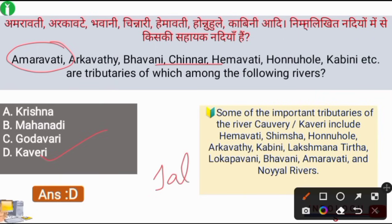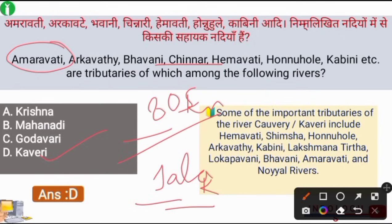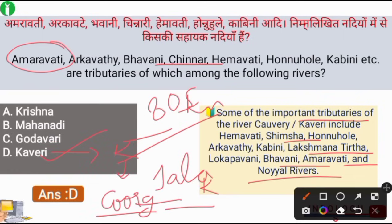The Kaveri River originates from Talakaveri in the Western Ghats. Its length is around 805 kilometers and it finally drains into the Bay of Bengal. It is an important river of South India. Some important tributaries of the Kaveri River include Hemavathi, Shimsha, Harangi, Arkavathi, Kabini, Lakshmana Tirtha, Lokapavani, Bhavani, Amravati, and Noyil. The Kaveri River originates from the Coorg district of Karnataka in the Brahmagiri range of Western Ghats.